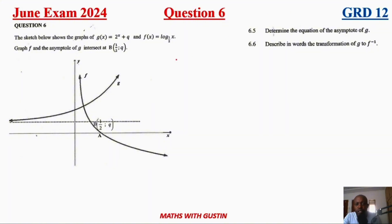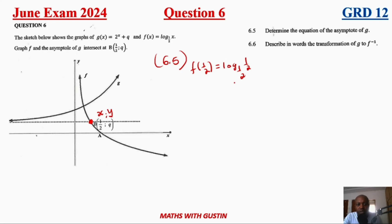Question 6.5 asks us to determine the line of asymptotes of g. You are at point B, which is also on f, where the x-value is one-half, but you don't know y, which is q. Substituting x = ½ into f(x) gives y = 1. Therefore q = 1, and the equation of the line of asymptotes is y = 1.